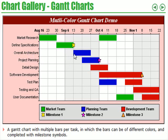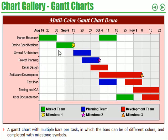The next thing is overall architecture, and this one is going for a fortnight. In the second week of the fortnight, project planning starts off with the planning team. So here we can see the work of three teams: the market team, the planning team, and the development team.